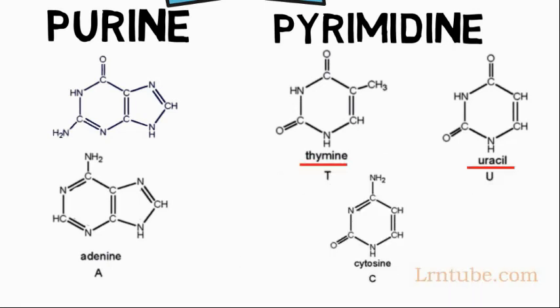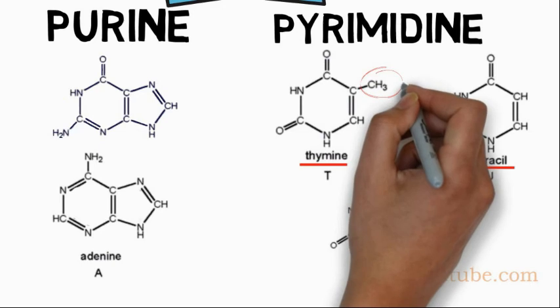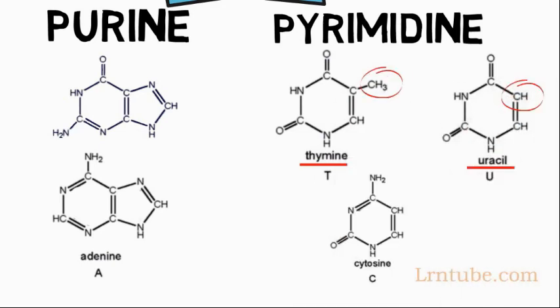Thymine and uracil are chemically similar molecules. Thymine is present in DNA while uracil is present in the RNA. From the structure of the thymine and uracil, you can see that the only difference found is in the fifth carbon atom.